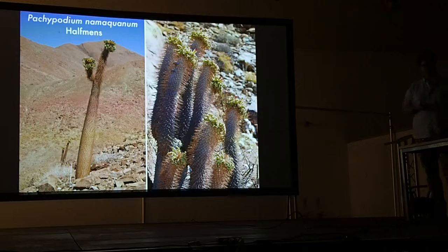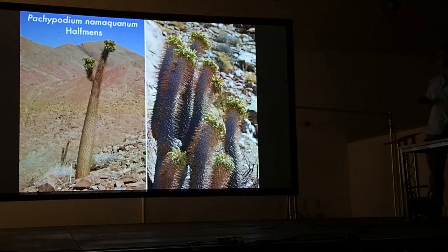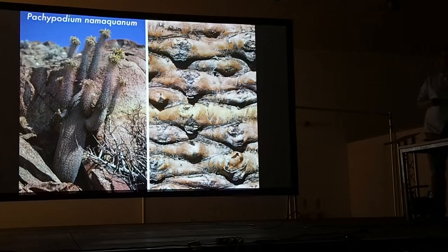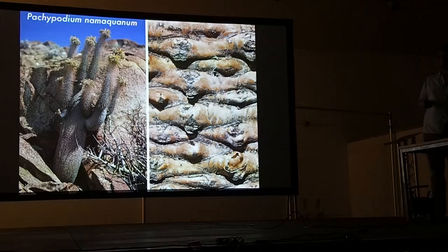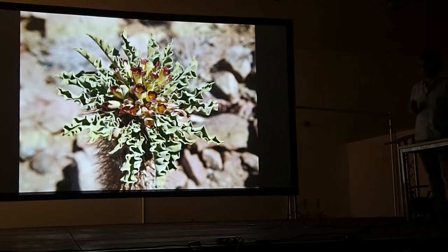It's quite spooky walking through the Richtersveld and seeing these silhouettes on the hillsides — they really do look like people sometimes. Here's another picture of the bark of Pachypodium namaquanum — this is probably the specimen I saw with the most branches, which was pretty impressive. And here are the flowers and leaves. That's the last you'll get of it.